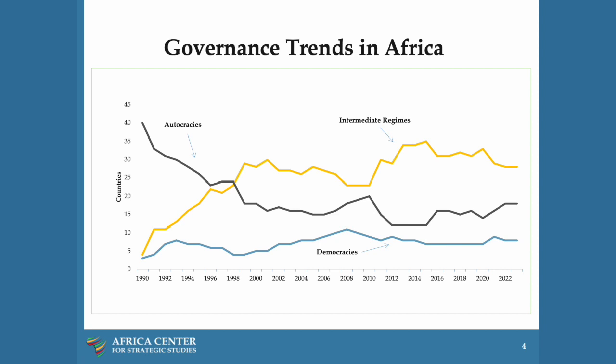Because of this backsliding, starting in 2019, we've actually seen a reversal where a majority of African governments are now autocratic-leaning, reversing some of the progress seen over the previous couple of decades. During this last period, we've also seen a dramatic increase in the number of countries in conflict — moving up from seven countries in 2010 to 16 countries in conflict today, three-quarters of which are authoritarian-leaning.